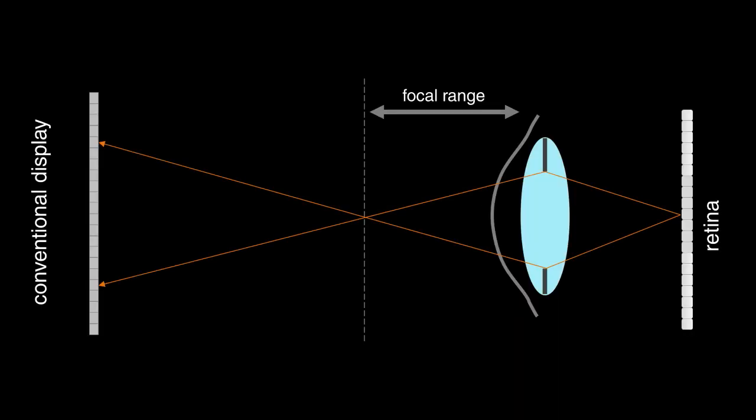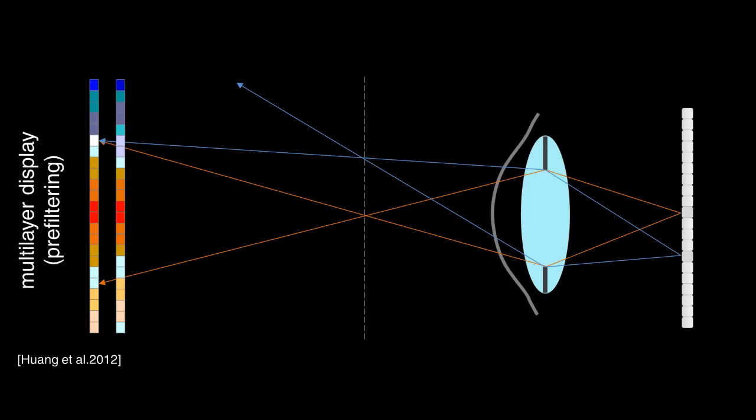For the display outside the focal range of the eye, the image is convolved with the kernel, and the retina receives a blurred image. The multi-layer method prefiltered the image content, so a sharp image is received, but because of the shared pixels, colors are mixed, and the contrast is low.